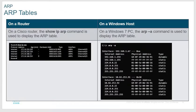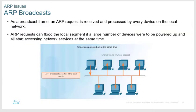ARP requests can flood the local segment if a large number of devices power up simultaneously. For example, if a power outage takes down four switches and all the PCs, when power comes back the network is slow for the first few minutes. First, the switches have to relearn all MAC addresses, so everything becomes a broadcast. Second, all ARP caches are blank so every PC has to broadcast for everything it's trying to reach. Just tell users to wait five minutes.